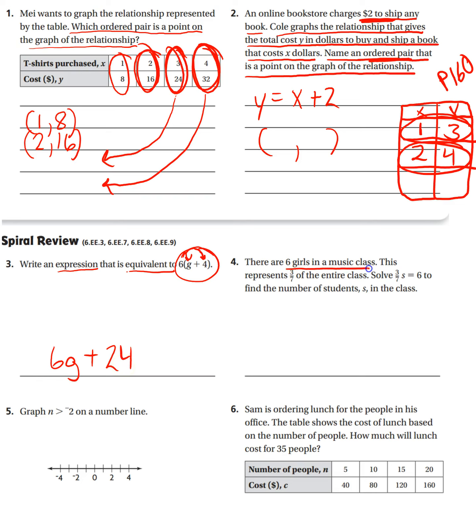Number four, there are six girls in a music class. This represents three-sevenths of the entire class. Solve this equation to find the number of students in the class. So we have three-sevenths S equals six. A couple different ways you can solve this problem.